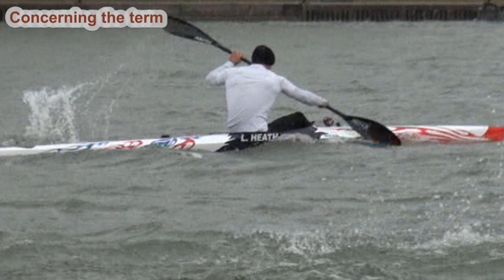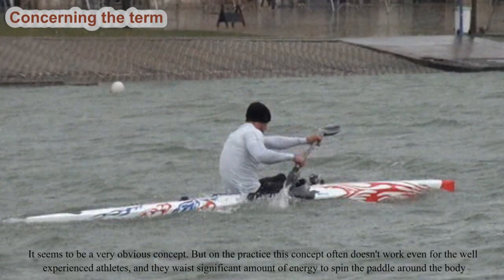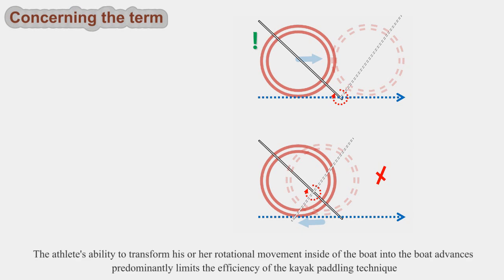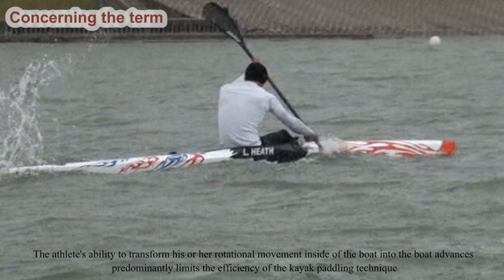It seems to be a very obvious concept. But in practice, this concept often doesn't work even for well-experienced athletes, and they can waste a significant amount of energy spinning the paddle around the body. The athlete's ability to transform his or her rotational movement inside the boat into boat advancement predominantly limits the efficiency of the kayak paddling technique.